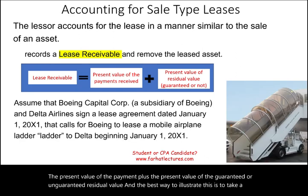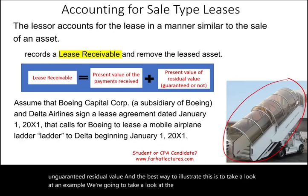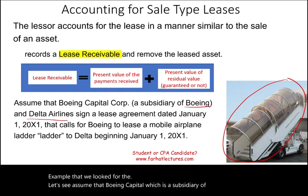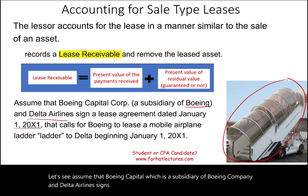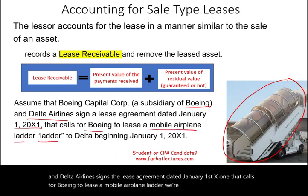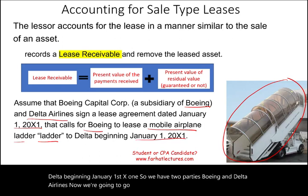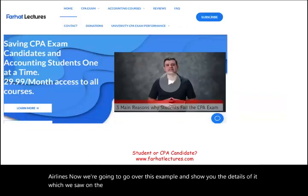To illustrate, we'll use an example: Boeing Capital, a subsidiary of Boeing, and Delta Airlines sign a lease agreement dated January 1, X1, calling for Boeing to lease a mobile airplane ladder to Delta beginning January 1, X1. We'll go through the details of this example, which is a slightly modified version of what we saw in the lessee session.